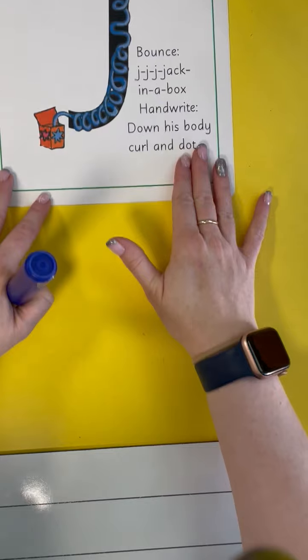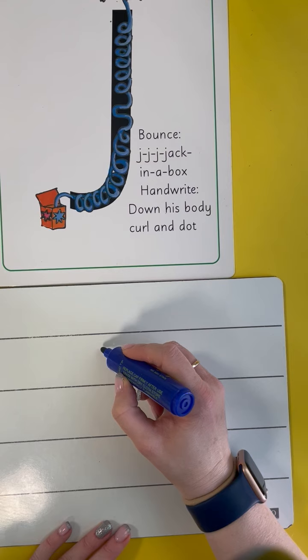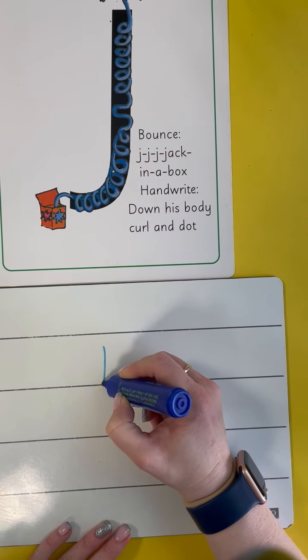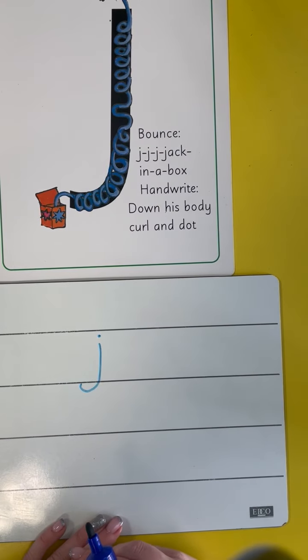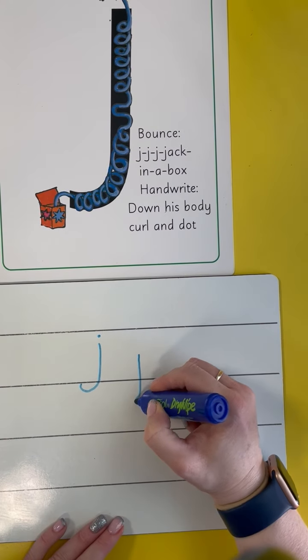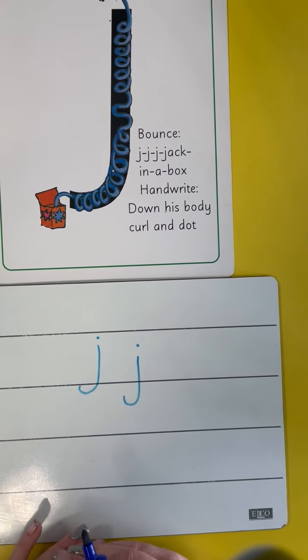Okay, now we're going to write it on the board. Down his body, a curl, and a dot for his head. Down his body, a curl, and a dot for his head.